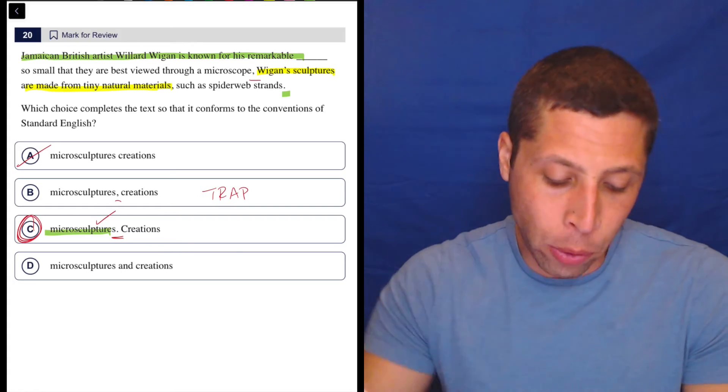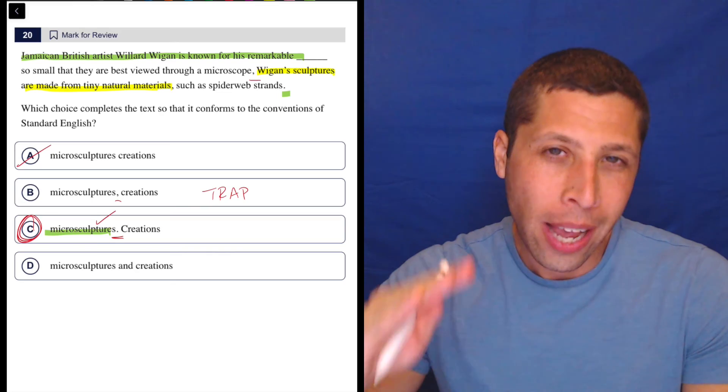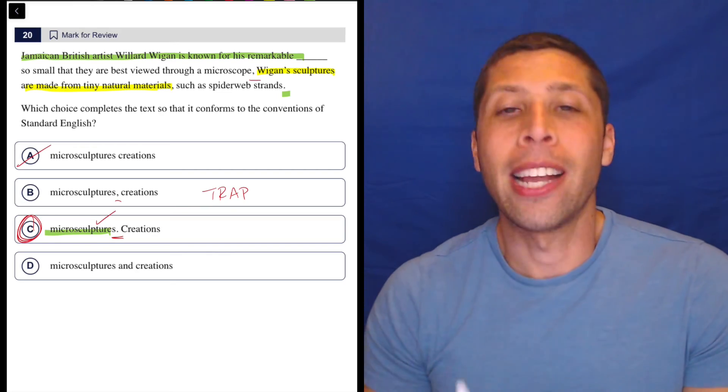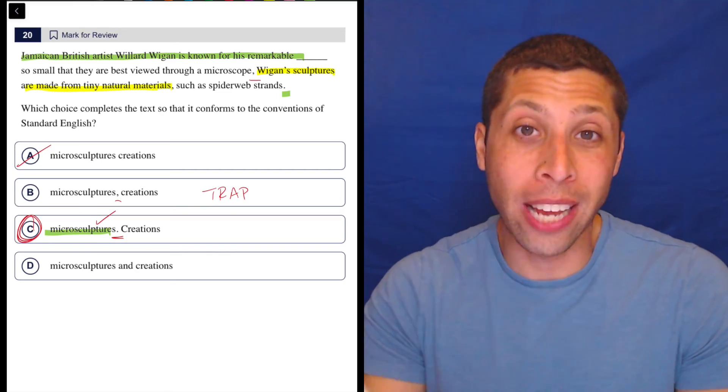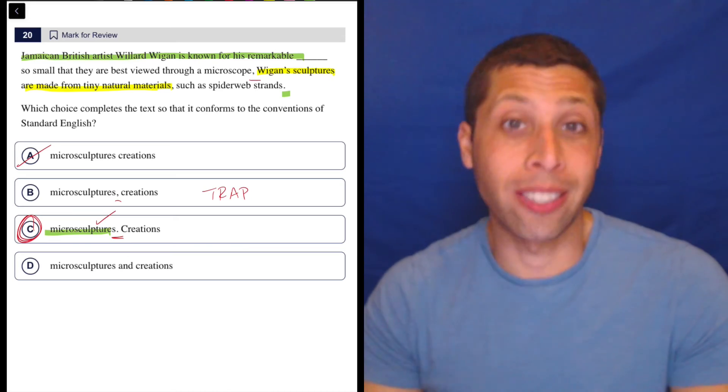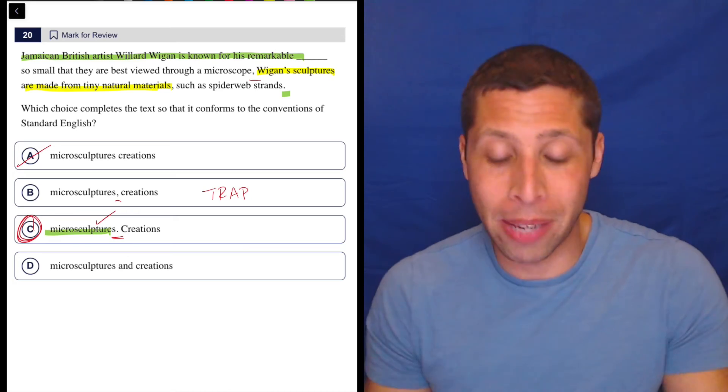But they know that many of you are going to read D and kind of stop short and be like, oh yeah, that sounds fine. It's describing the sculptures. We're good to go. But you got to read the whole sentence, especially because the answer choices told us this was about sentence structure. So we need to know where they begin and end.